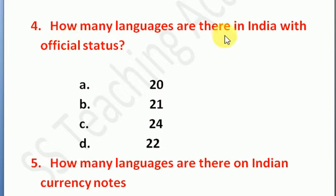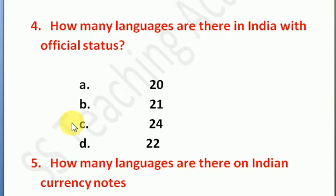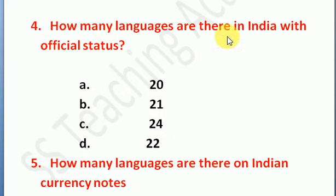Question number 4: how many languages are there in India with official status? Option A: 20 languages, Option B: 21 languages, Option C: 24 languages, Option D: 22. The right answer is Option D — 22 languages are there in India with official status.